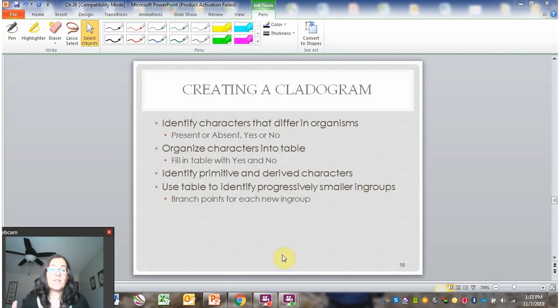Say your table has five organisms. You want an in-group that has four organisms, then an in-group that has three, then an in-group that has two, and then a final in-group that just has one organism. As you get those progressively smaller in-groups, those are going to line up with a branch point or a node in your cladogram. That's the basic process.